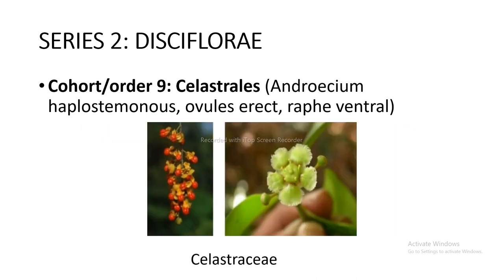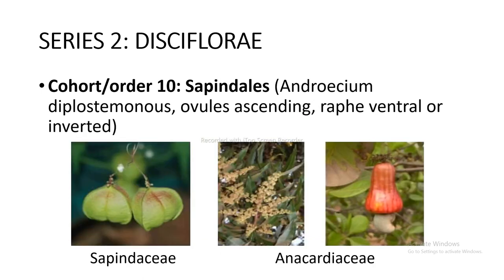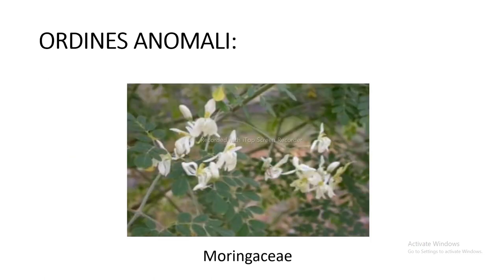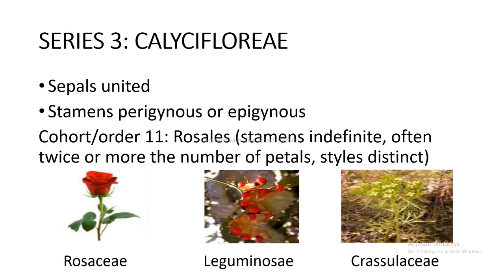Cohort and order 9 Celastrales — androecium haplostemonous, ovules erect and raphe ventral — includes Celastraceae as shown in the figure. Cohort and order 10 Sapindales — androecium diplostemonous, ovules ascending and raphe ventral or inverted — includes Sapindaceae and Anacardiaceae as shown in the figure. Ordines Anomali: Moringaceae as shown in the figure. Series 3 Calyciflorae: sepals united, stamens perigynous or epigynous.